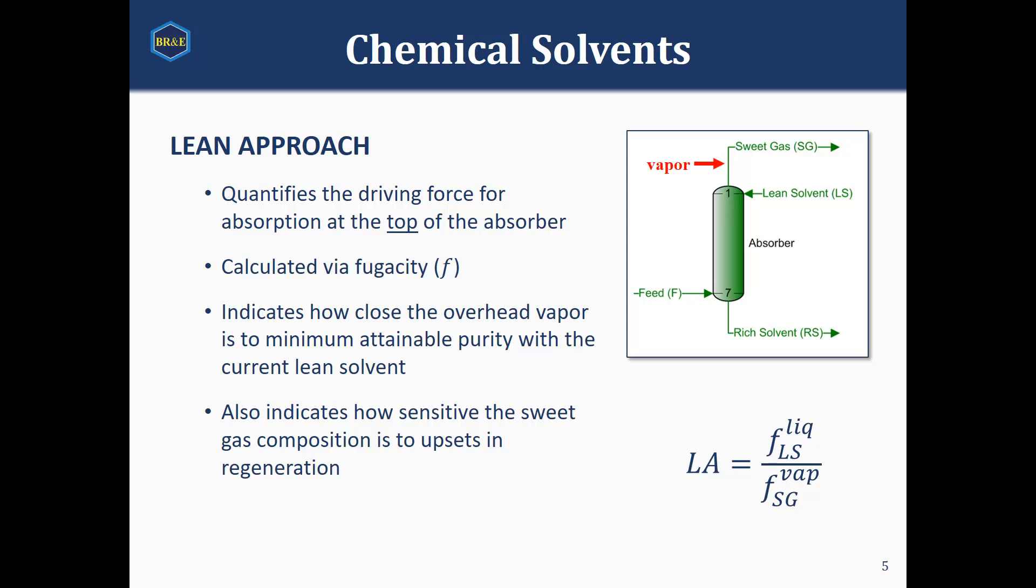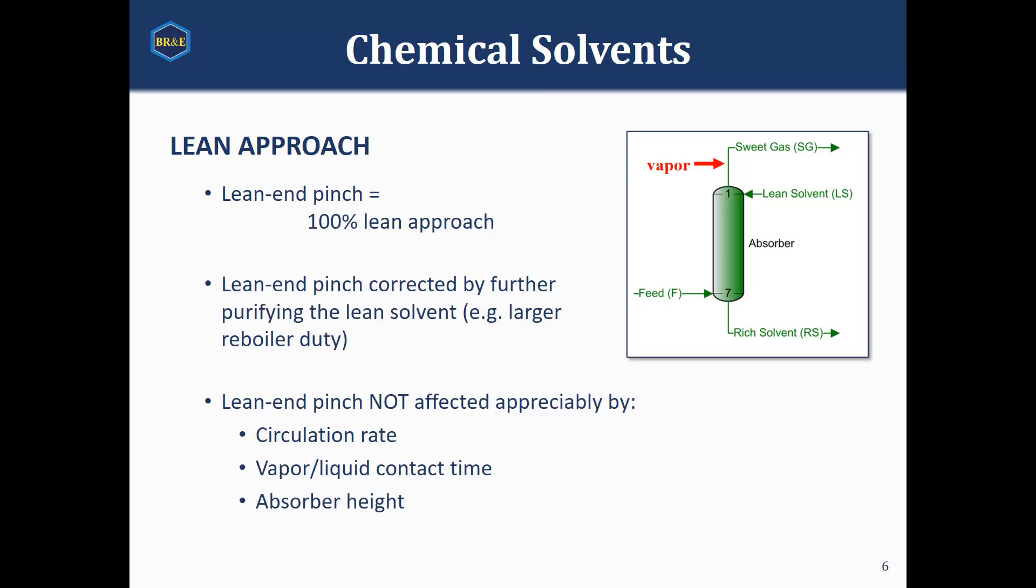And so this is an indication of how sensitive our sweet gas would be to any upsets in regeneration. So the reason this is important is if our lean approach is very high, we'll call ourselves lean end pinched. And what this means is we could potentially have issues where any upsets in regeneration would throw us way off spec. And so we would want to run some scenarios at different regeneration levels to make sure that we really are at a stable point where any upsets in regeneration aren't going to totally throw off our sweet gas.